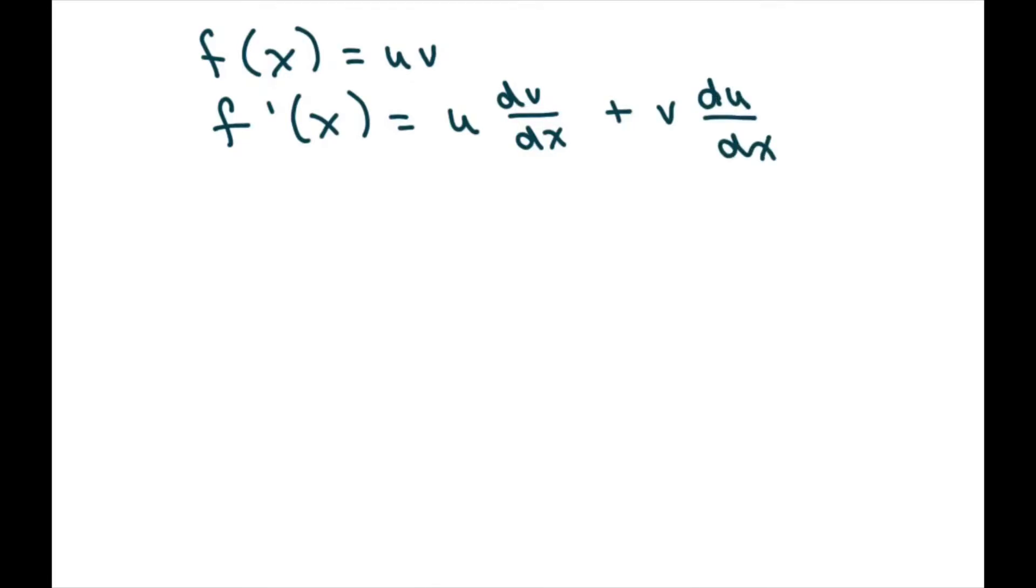So if I write down my equation real quick again, we have x squared, that's your u, and cosine of 2x which is your v.